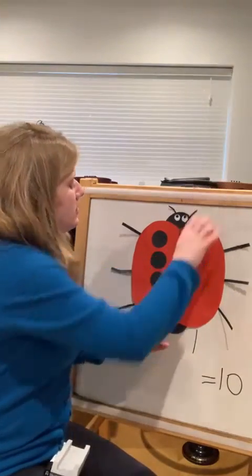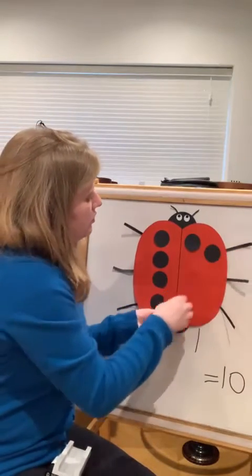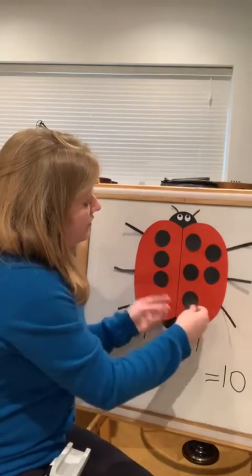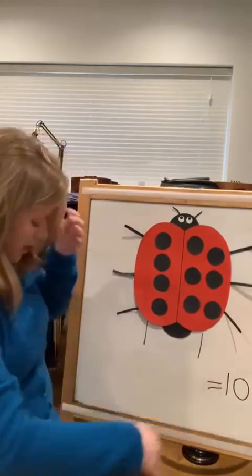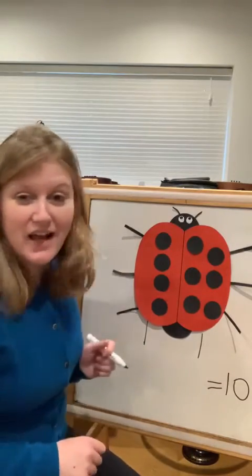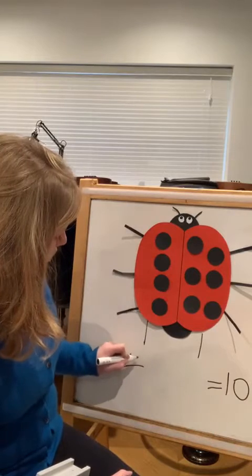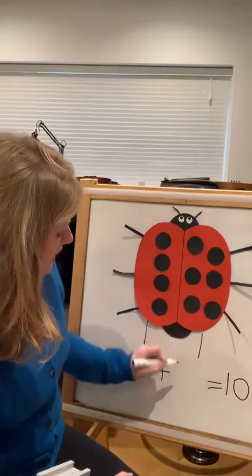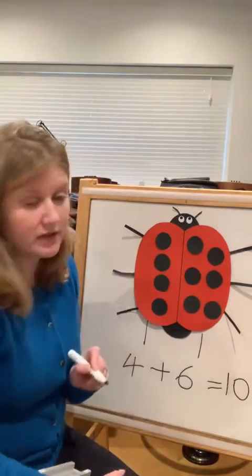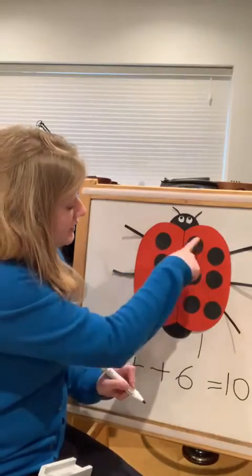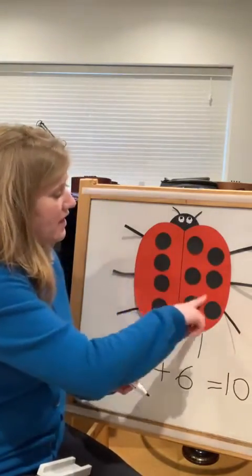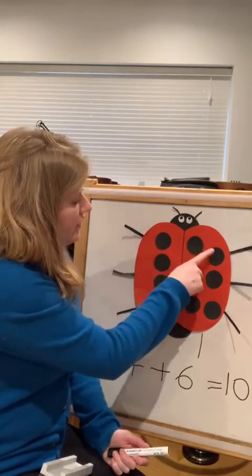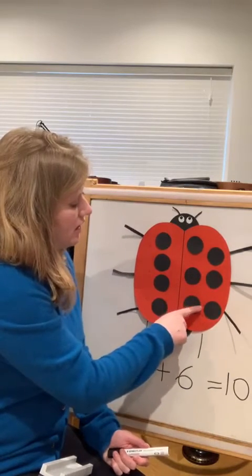So I need to add six more spots to Lucy: one two three four five six. That should all add up to ten. We've got four this side — four plus six equals ten. Four on this side, six on this side, altogether make ten. Let's count and check: one two three four five six seven eight nine ten.